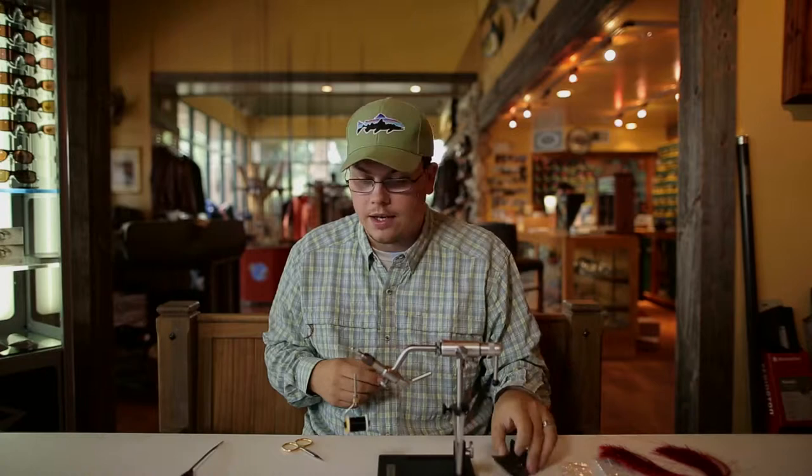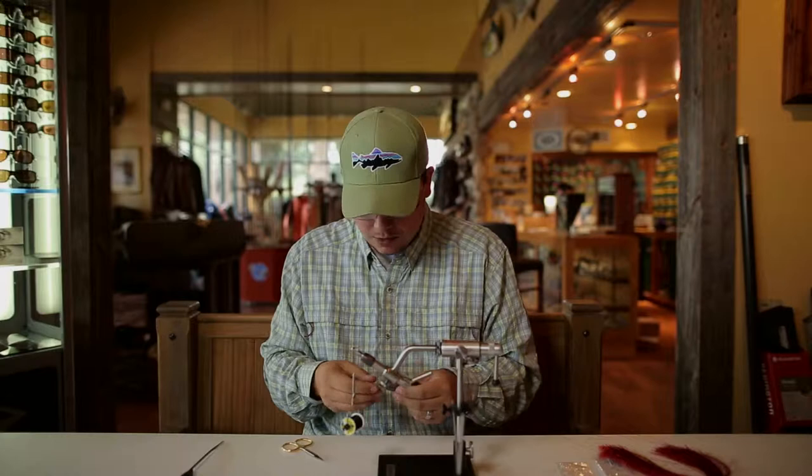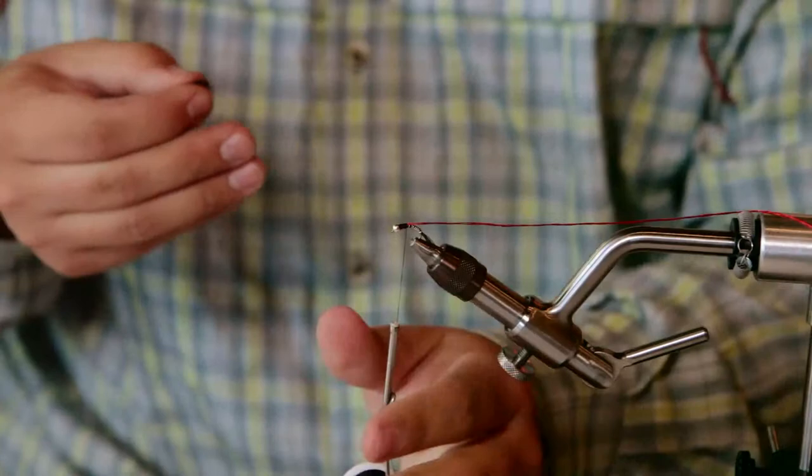The next part of the recipe calls for just your basic black rabbit dubbing. I'm going to take a small pinch of the rabbit dubbing, dub that onto my thread. This is now going to be the thorax of the fly.